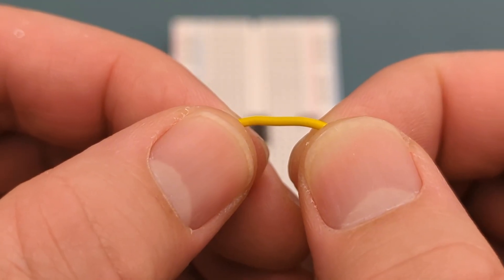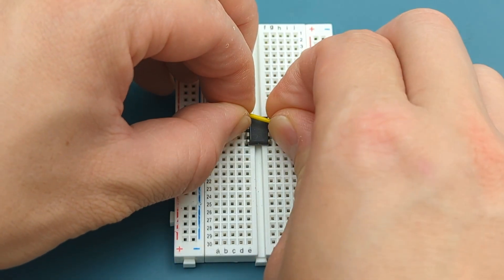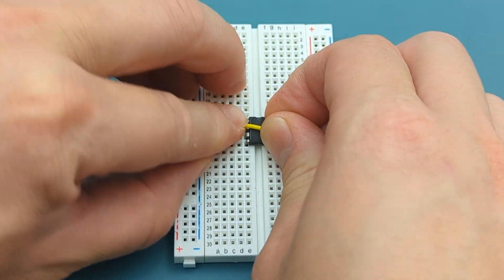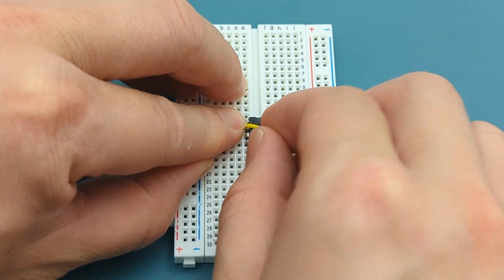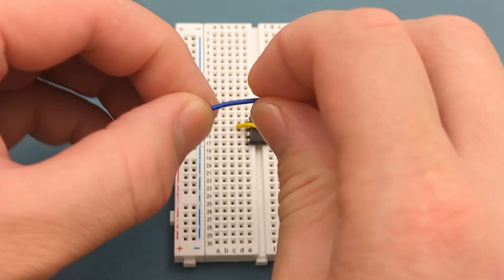Use a jumper wire to connect pin 2 or trigger to pin 6 or threshold. Use a jumper wire to connect pin 4 or reset to pin 8 or VCC.